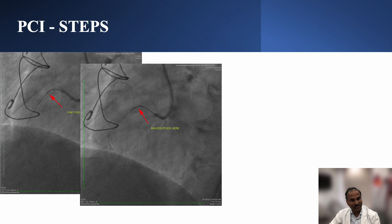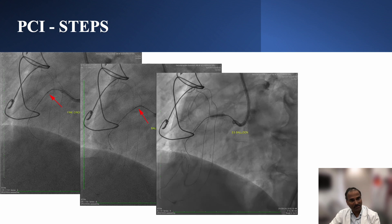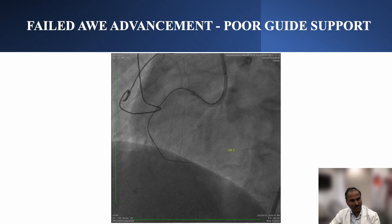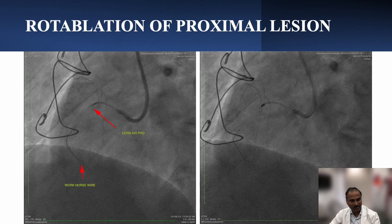Despite balloon dilatation, we were not able to advance Fine Cross. With guide extension support we could advance Fine Cross. The problem was Fine Cross was proximal to the distal lesion, so we escalated the wire to UB3 and could cross, but UB3 was not going beyond this point because guide backup was not sufficient. That's when we decided to take the guide extension further down, but it was stuck again at the proximal lesion.